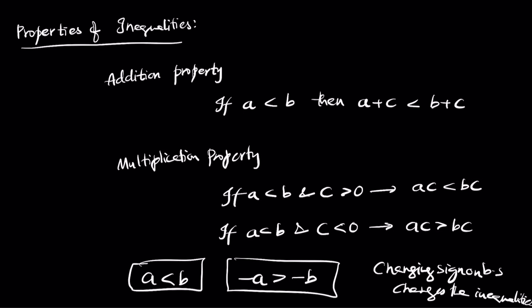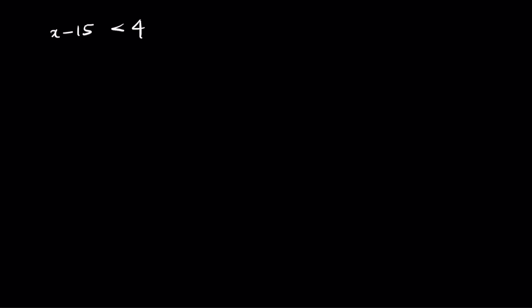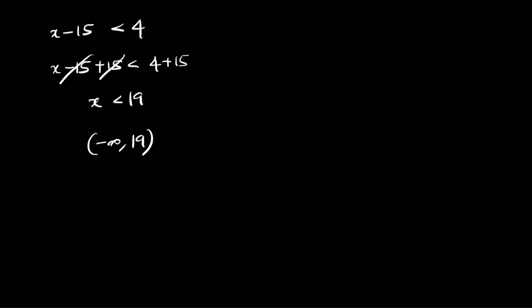Let's demonstrate the addition property. We have x minus 15 less than 4. To isolate x, add 15 on both sides: x minus 15 plus 15 less than 4 plus 15. The minus 15 plus 15 cancel, giving x less than 19. Written as interval notation, it becomes negative infinity comma 19 open interval.